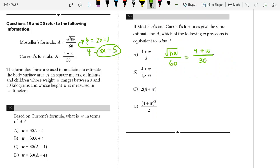And keep in mind, we want to get HW by itself. But when fractions are set equal to each other, we can cross multiply. So we get 30 times the square root of HW equals 60 times (4 plus W), which ends up being 240 plus 60W.